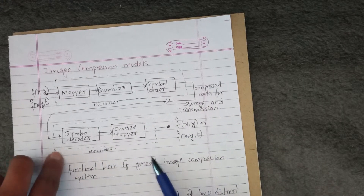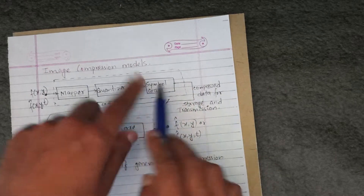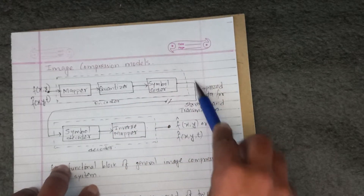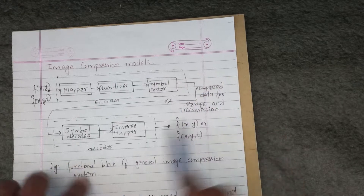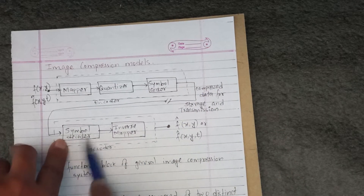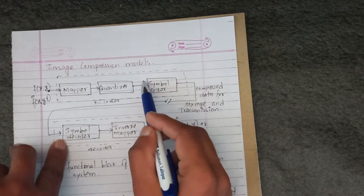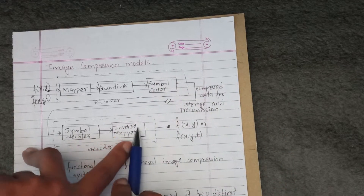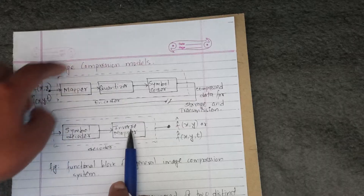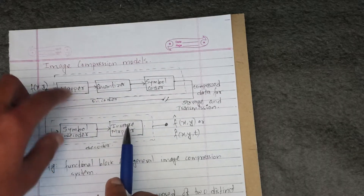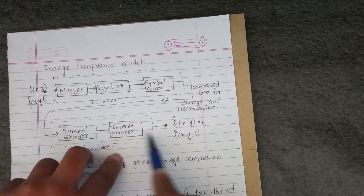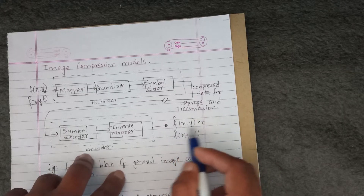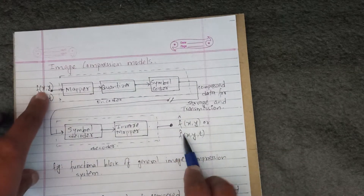The decoder performs decoding. The coding and decoding process involves the decoder reversing the encoding steps.